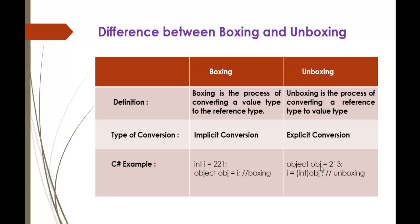What is the type of conversion happening in Boxing? It is implicit conversion — the compiler does this conversion by itself. But Unboxing is explicit conversion, and this has to be done by the developer or programmer who is coding. Boxing happens by the compiler itself; Unboxing must be done by the developer.